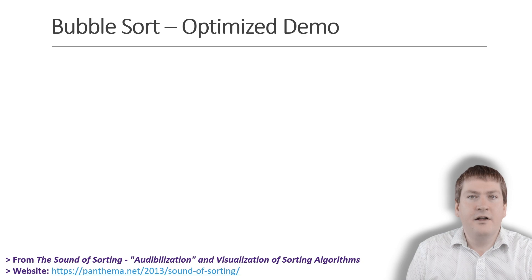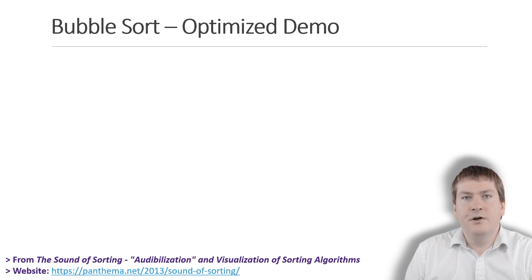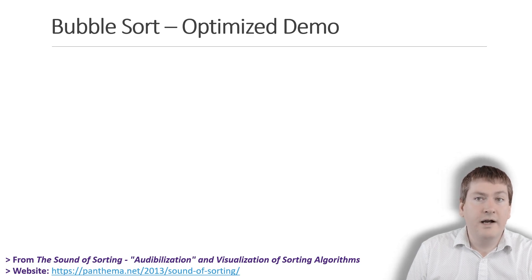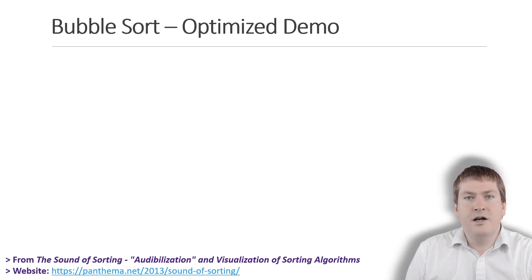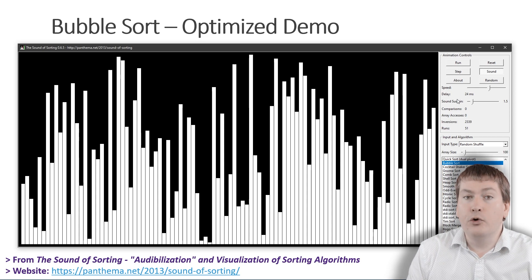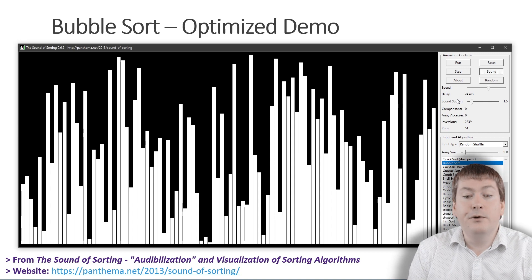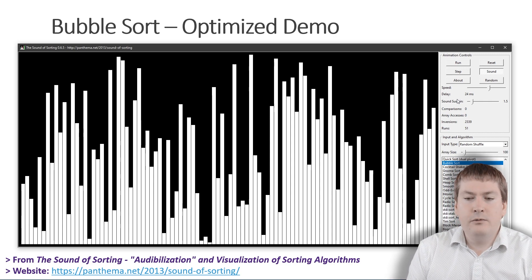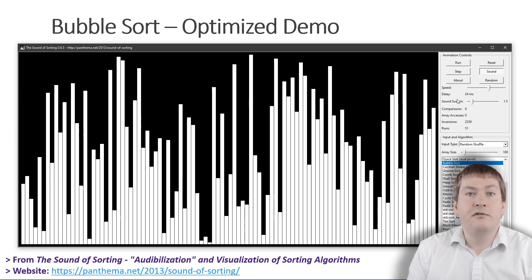Let's now take a look at another way to visualize bubble sort, this time by also using sound. If you're interested, you can download the program at the link shown on the screen, or just Google 'the sound of sorting.' What we have here is a program called the Sound of Sorting. It's a cool little program that lets us visualize a few different sorting algorithms.